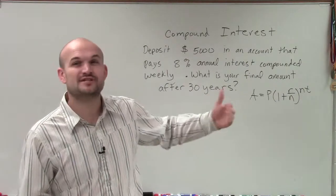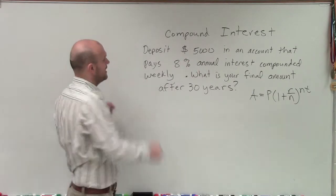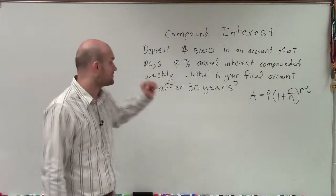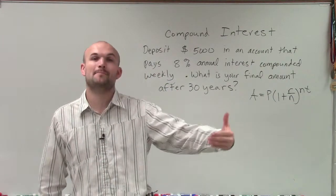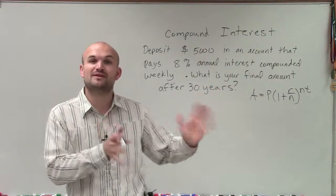So our initial investment is going to be $5,000. And the interest rate, the annual interest rate on this account, is going to be 8%. And we're going to compound this weekly. So that means after every week, it's going to compound the interest rate on my initial investment plus previous interest.